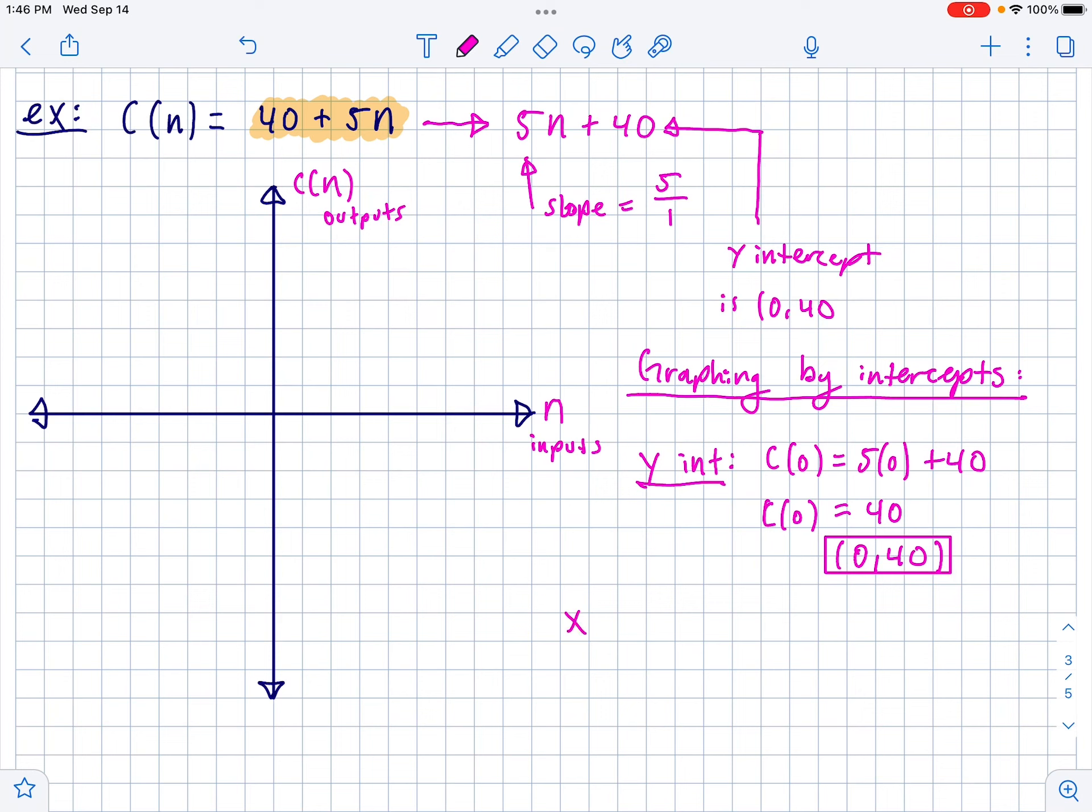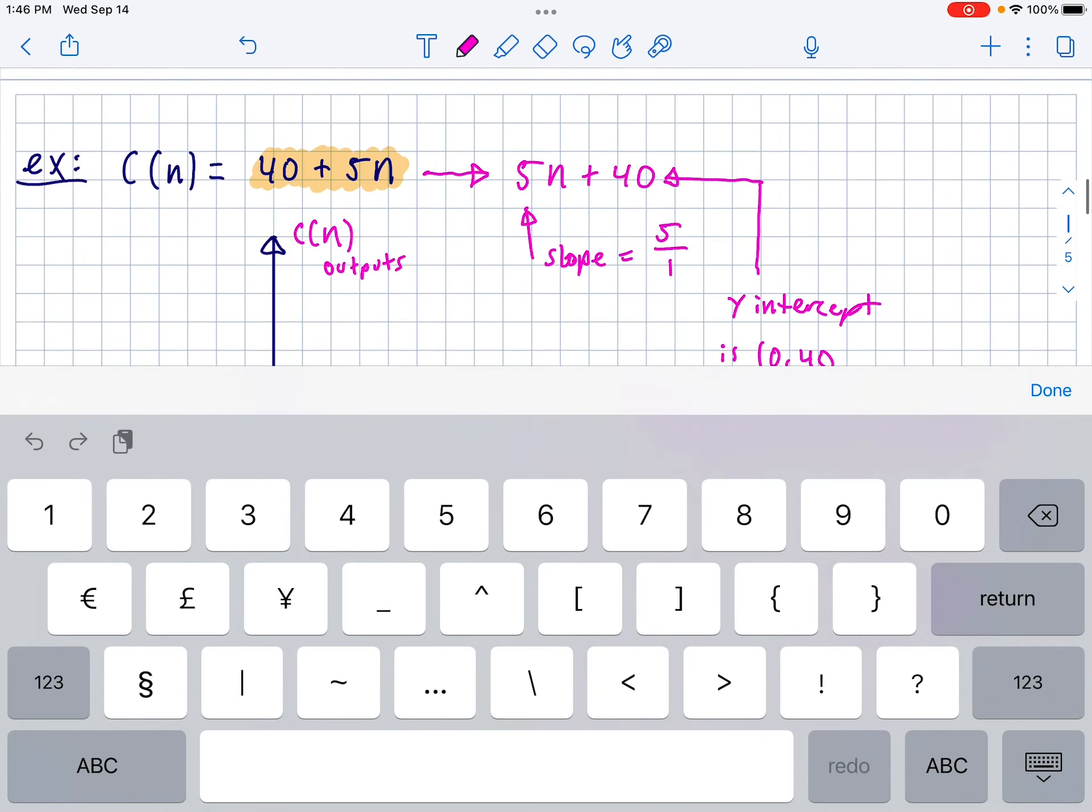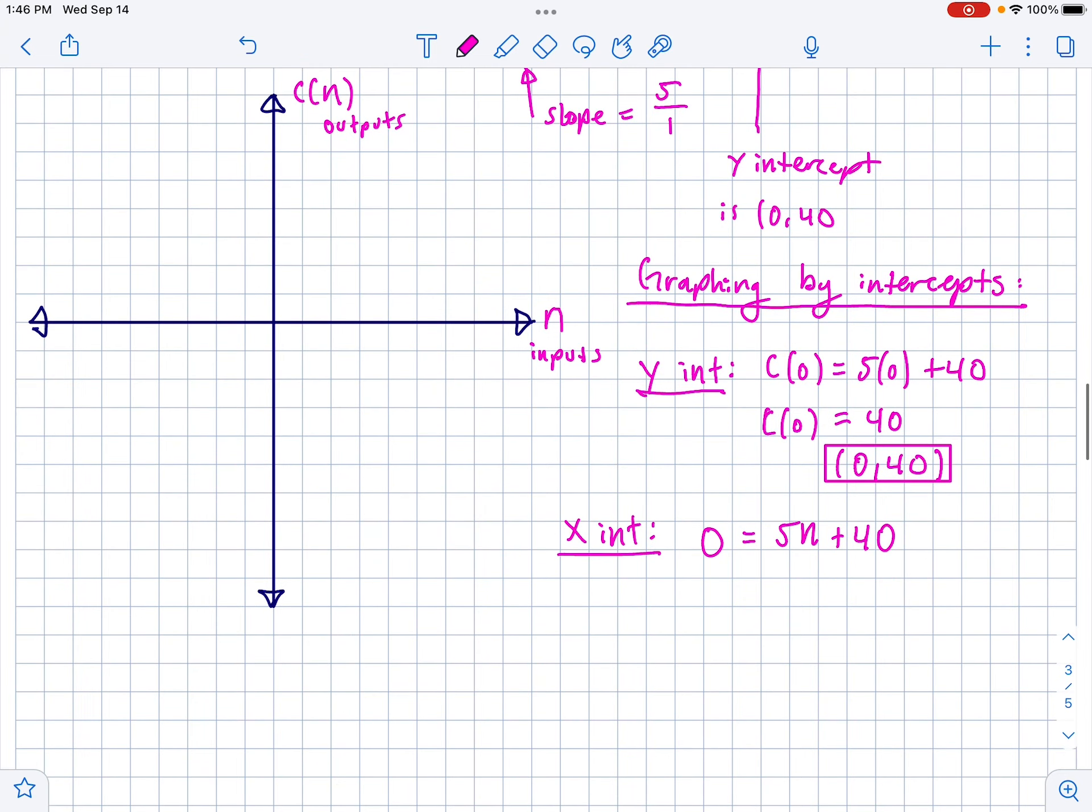Now, to find the x-intercept, so for the y-intercept, we made x 0, and then we found the y. It's the exact opposite with the x-intercept. If you want to find the x-intercept, you make y 0. So here, we're going to set the equation equal to 0 and say this is 5n plus 40, and then solve for n in this case. So to solve for n, we subtract 40 off each side, so we get negative 40 equals 5n, then divide both sides by 5, and then we get negative 8 equals n. That means that our x-intercept is negative 8 comma 0.